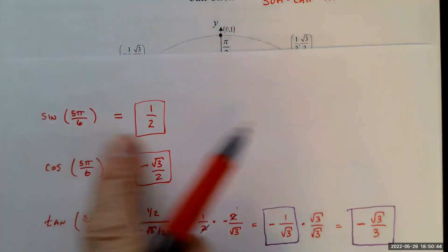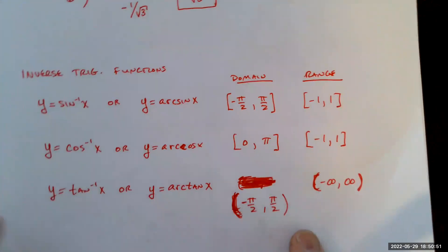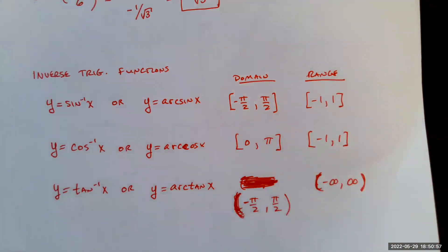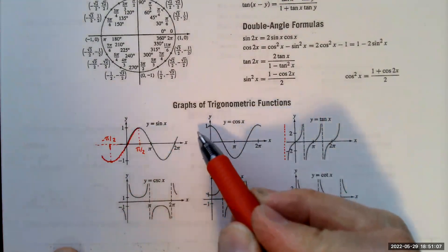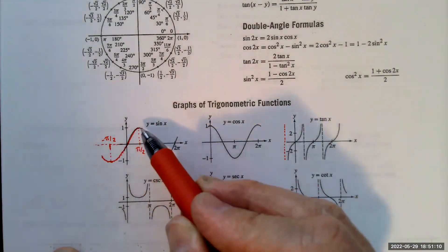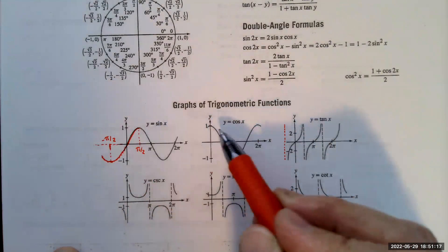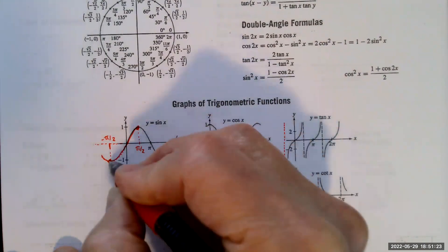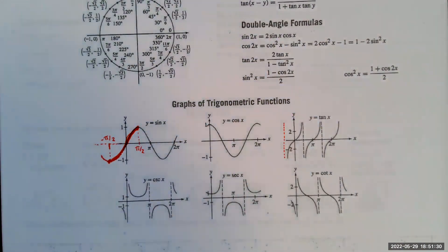There are some restrictions. The domains are created in order to make the sine function one-to-one. Looking at the graph of the sine function, it keeps hitting the same value over and over — it equals 1 at π/2, at 5π/2, and infinitely many times. So we restrict the domain from negative π/2 to π/2, where the sine function is one-to-one.